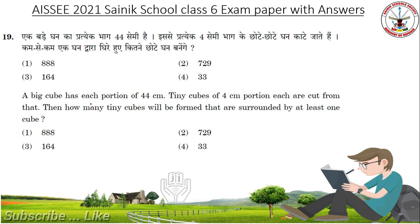A big cube has each portion of 44 centimeters; tiny cubes of 4 centimeter portion each are cut from it. Then how many tiny cubes will be formed that are surrounded by at least one cube? Answer: 729.